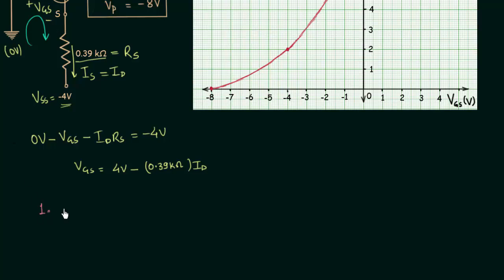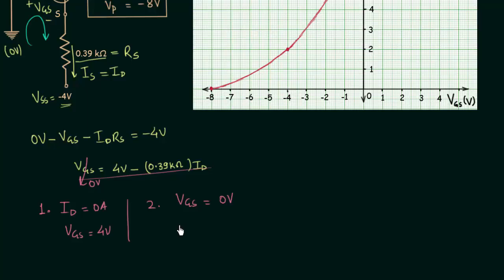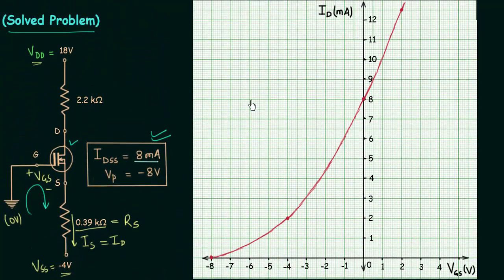To plot this straight line we need two points. For the first point, set ID equal to 0A and you get VGS equal to 4V. For the second point, set VGS equal to 0V and you get ID equal to 4V divided by 0.39 kΩ, which gives 10.25 milliamps, or approximately 10.3 milliamps.